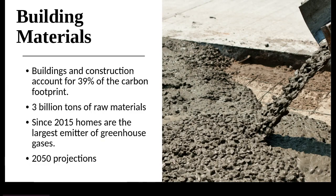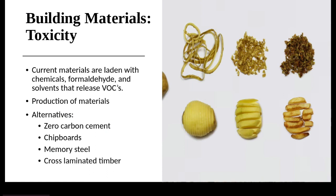Building materials have changed dramatically throughout time. Studies show that building and construction accounts for 39% of our carbon footprint, with concrete alone accounting for 8%. Many people are surprised by this, incorrectly thinking transportation is the largest producer of carbon dioxide. Each year 3 billion tons of raw materials are used in construction, and since 2015 residential homes have become the single largest emitter of greenhouse gases. Projections show that by 2056 the population will have gone up by 50%, and energy consumption and manufacturing will increase three-fold. Not only is the creation of building materials a huge emitter of greenhouse gases, but we also have to worry about toxicity — current materials are laden with chemicals, formaldehyde, and solvents that release volatile organic compounds, or VOCs, which create poor indoor air quality and can lead to issues like asthma.